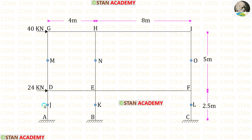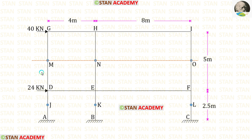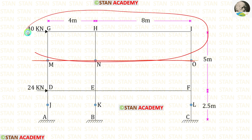In the top and bottom stories, let us name the centers of the columns J, K, L, M, N, and O. Let us split the frame into two parts from the center of the columns in the top story and take the upper part.